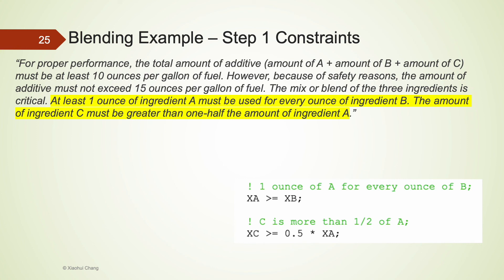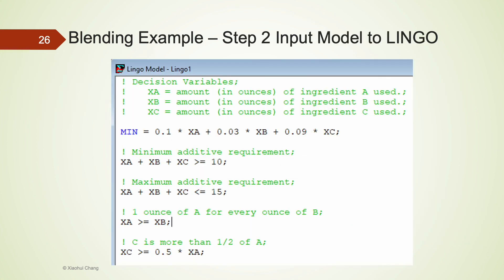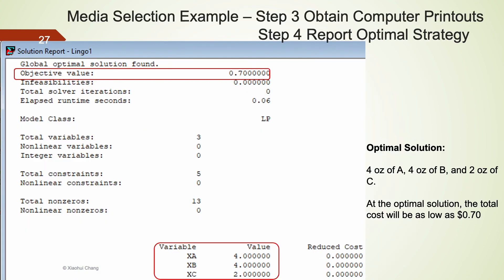We are done with step 1, with all decision variables defined and objectives and constraints stated clearly. In step 2, we input our model into Lingo. After clicking the solver icon, we obtain the printout: the optimal solution is to mix 4 ounces of A, 4 ounces of B, and 2 ounces of C per gallon of fuel, reducing the total cost to $0.70 per gallon. I hope you found these two examples helpful. This also concludes this video.